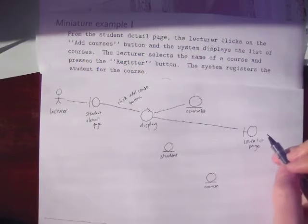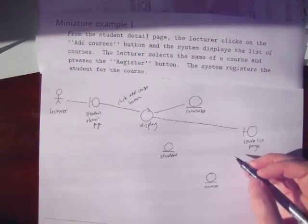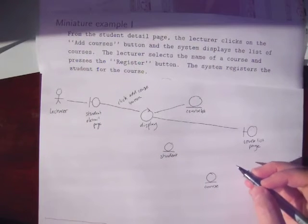Now, the lecturer selects the name of the course and presses the register button. The system registers the student for the course. So we've got quite a lot of behavior going on here, but it seems to split into two parts. The lecturer is going to select the name of the course.